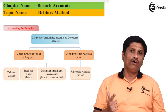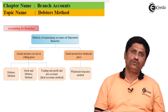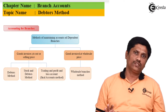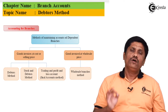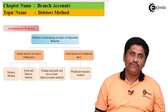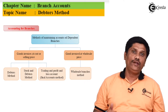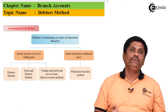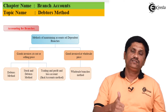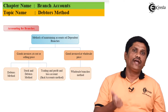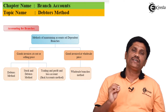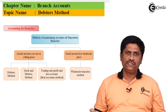The first method is the data method — a simple branch account. When you elaborate the data method, it becomes the stock and data method. You prepare a simple branch account under the data method. The stock and data method goes a little more in depth. The third method, the trading P&L account method, is a memorandum trading P&L account approach.